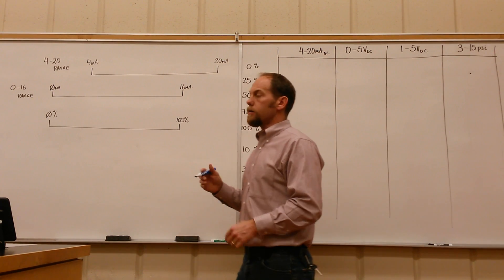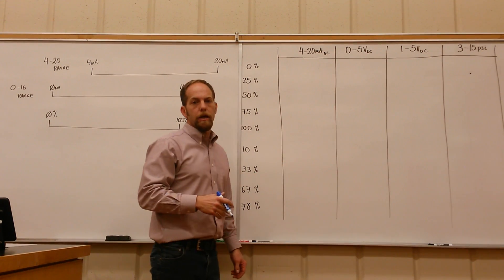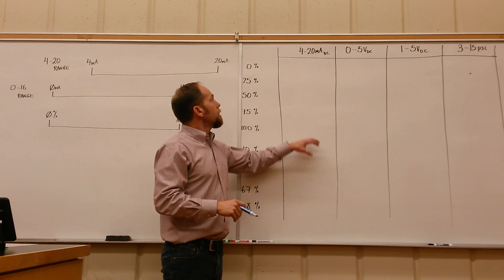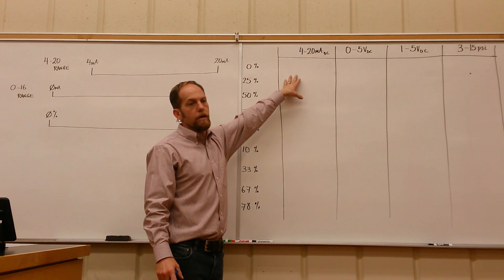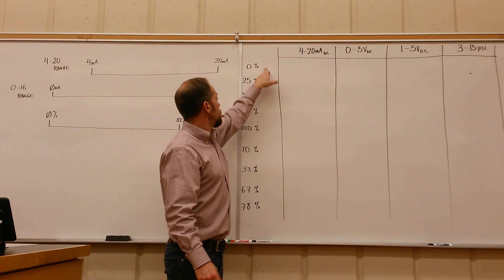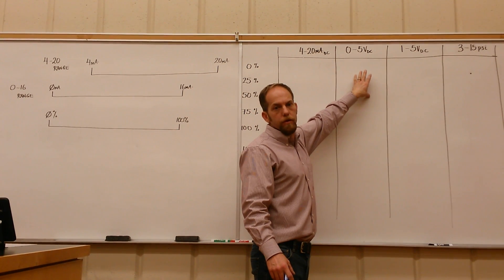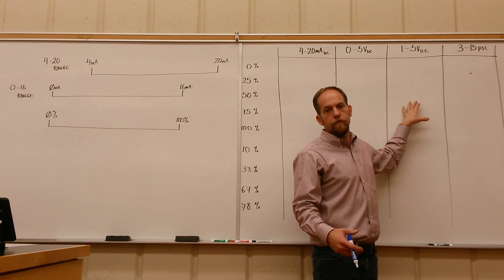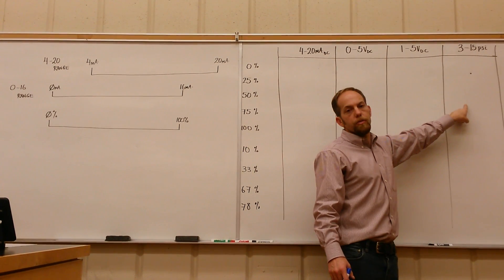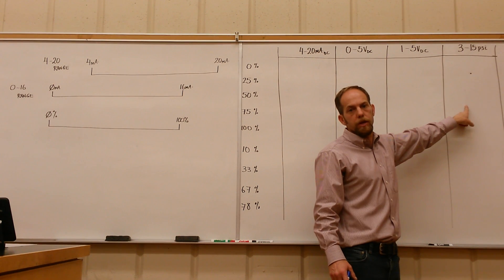Alright guys, let's go over that standardized signal assignment that I gave you. There's a number of different analog signals out there in industry. One would be the current signal, so they use a 4 to 20 milliamp current to send 0 to 100%. For voltages, there's a whole whack of different voltages out there: 0 to 5, 1 to 5, also 0 to 10 volts. And if you need to use a pressure signal to open and close the valve, you'd use 3 to 15 psi.